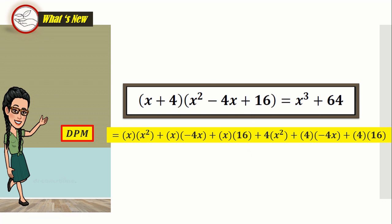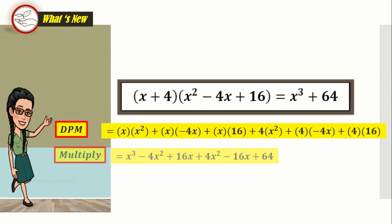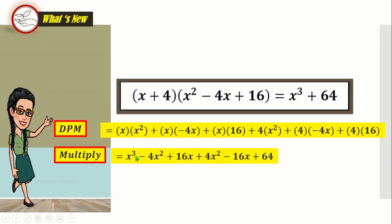Now, let us simplify by multiplying. x times x squared is x cubed, x times negative four x is negative four x squared, x times sixteen is sixteen x, four times x squared is four x squared, four times negative four x is negative sixteen x, and then four times sixteen is sixty-four.